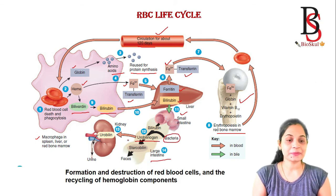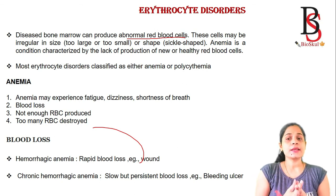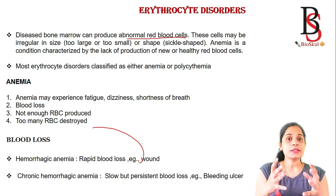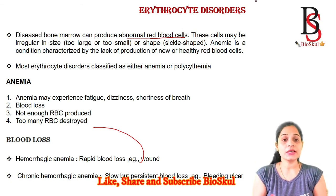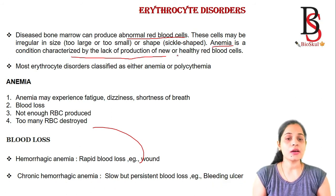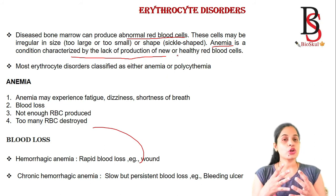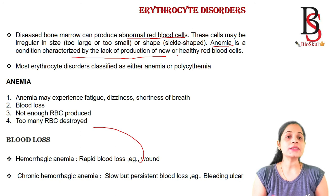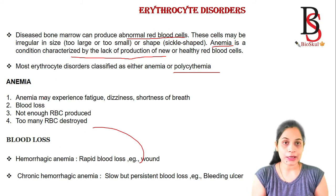Diseases of the bone marrow can produce abnormal red blood cells that may be irregular in size — too large or too small — or changed in shape. Most erythrocyte disorders are classified into two types: anemia, characterized by lack of production of new and healthy red blood cells, and polycythemia, the production of too many red blood cells.